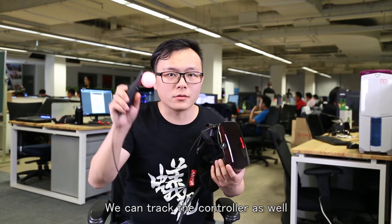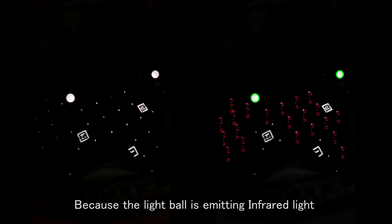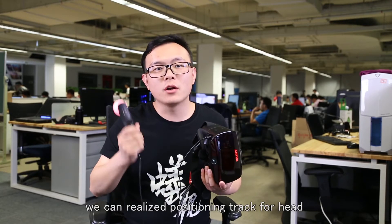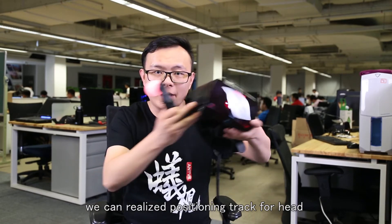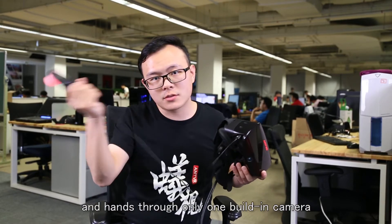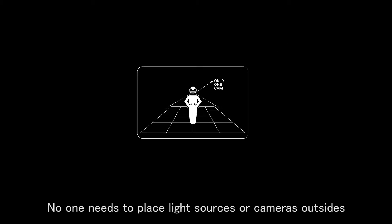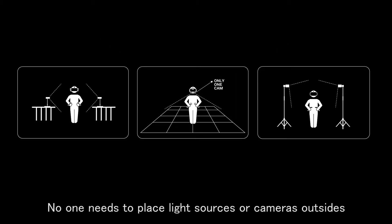By using this camera, we can track the controller as well. Because the light bulb is emitting infrared light which will be seen by the camera. By this way, we can realize positioning track by head and hands through only one built-in camera. No one needs to place light sources or cameras outside.